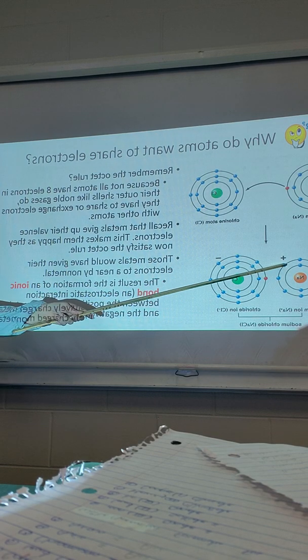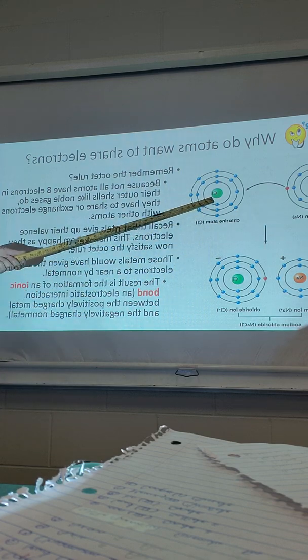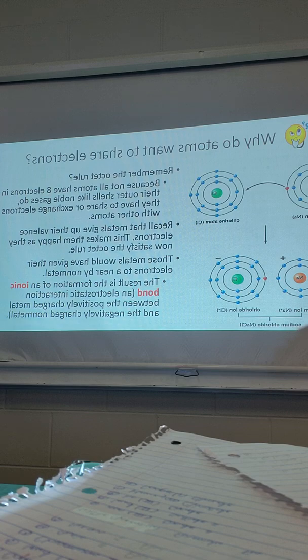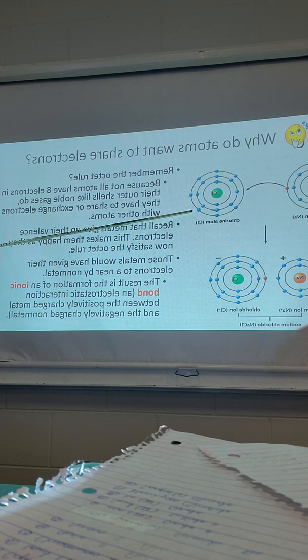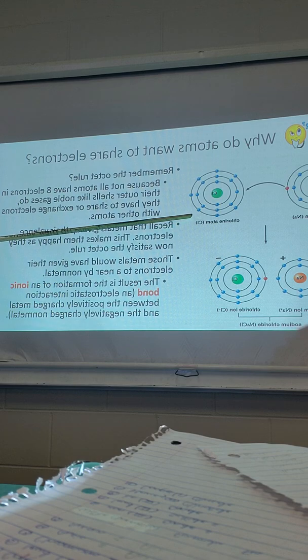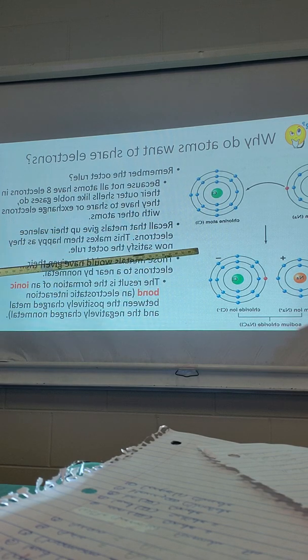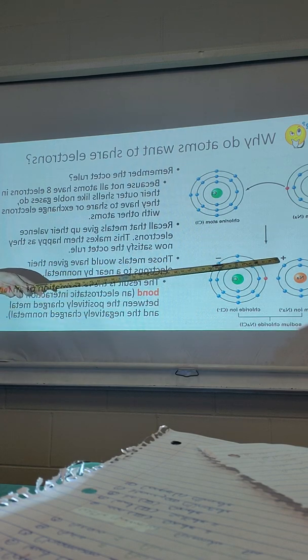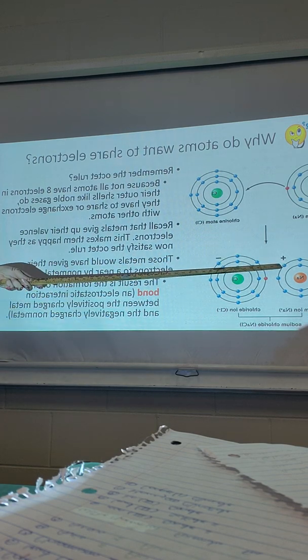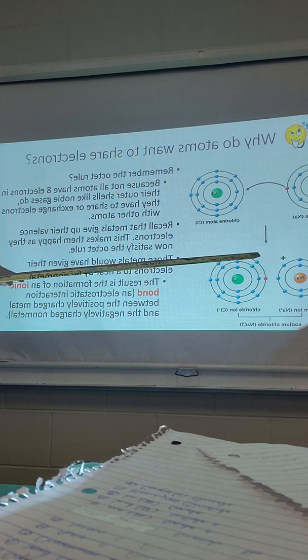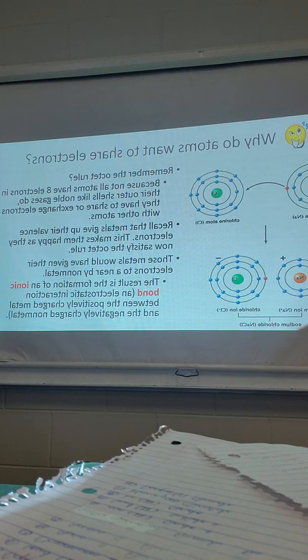And then chlorine. Chlorine is in group 7A. Very good. So how many valence electrons does this chlorine have? Seven. Is it easier to lose seven or gain one? Gain one. And that's what happens. It gains one and it becomes negative. The ionic bond is the electrostatic interaction or the attraction between these oppositely charged atoms. That's an ionic bond.